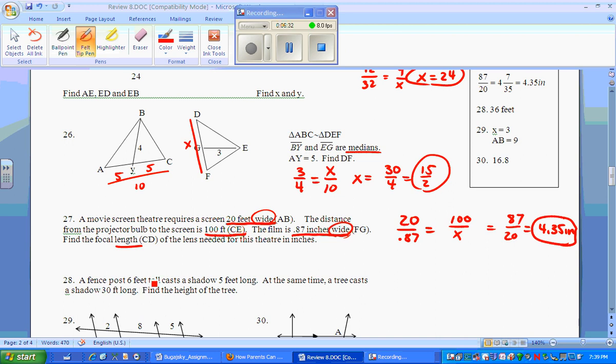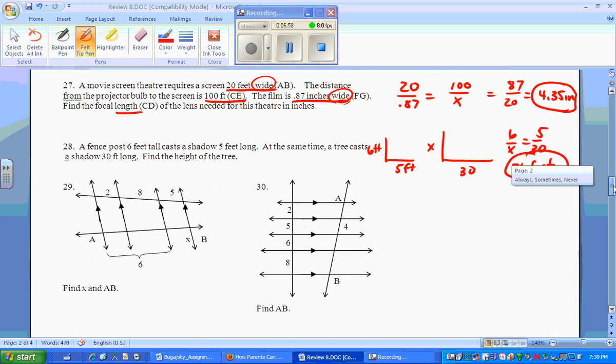A fence post is 6 feet tall, casts a 5 foot shadow. So you've got 6 feet and a 5 foot shadow. At the same time, a tree casts a 30 foot shadow. Find x. 6 is to x as 5 is to 30. Cross multiply. 36 feet, because they gave it to you in feet. So that is your answer.